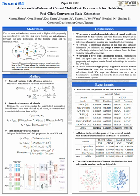Thirdly, we present a novel dual adversarial module operating on both the space and task level. It can denoise the click propensity and capture counterfactual embeddings to optimize the CVR task. What's more, we have released a high-quality large-scale dataset named TankUnionAds used for selection bias research in the advertising field. We hope our dataset can serve as a benchmark to facilitate the research of selection bias in recommender systems.